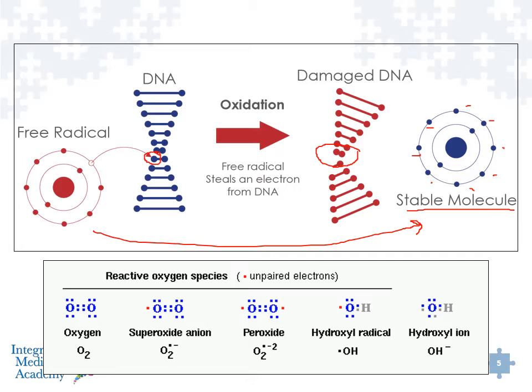The reason we take antioxidants — ascorbic acid and other antioxidants — is essentially to try and fill that voided space where electrons don't exist on the free radical, whether it's a hydroxyl radical, a peroxide, or superoxide anion.